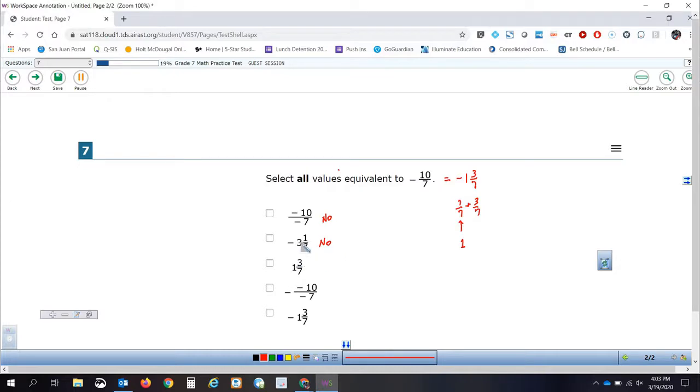This one looks promising because we've got 1 and 3/7, and we've got 1 and 3/7. The problem is we're looking for a negative 1 and 3/7, and this one is a positive 1 and 3/7. So this one is also a no. How about this one? A negative divided by a negative is a positive. So this actually becomes a negative 10/7. Hey, we have a winner, because that's what we were looking for: negative 10/7. Finally, we got one that worked. And guess what? Take a look at the last one: negative 1 and 3/7. They're an exact match, so this one is also correct.